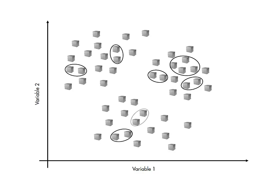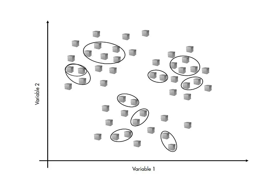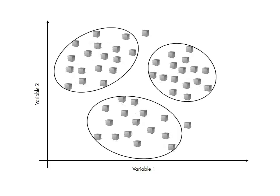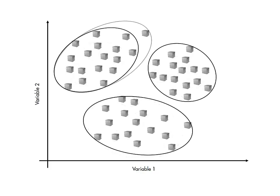Initially, each observation is its own group. Each linkage coalesces more observations into larger groups, until all the data has been linked into a single group.